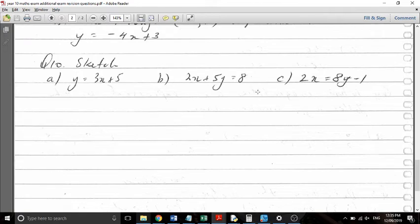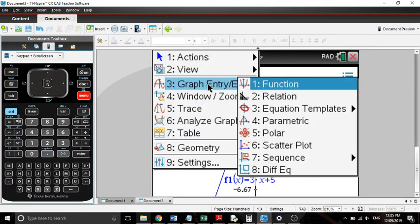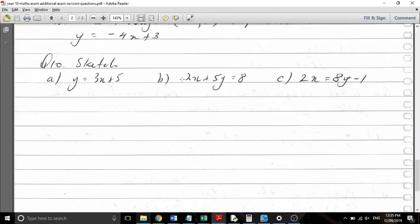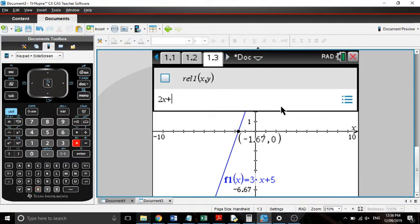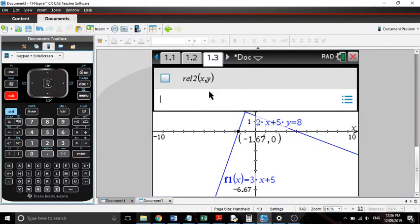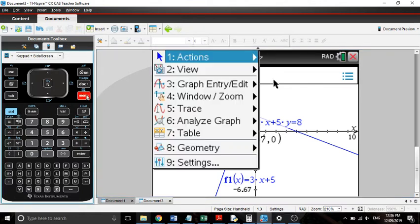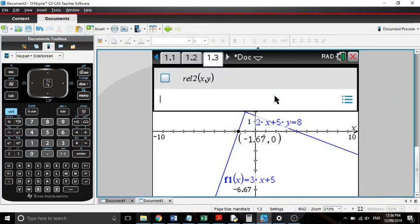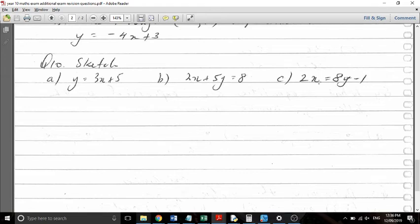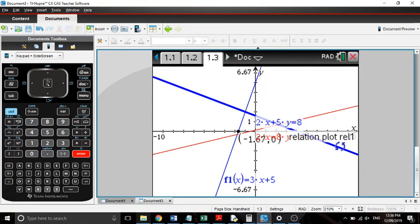If you're given something like this, where we've got 2x plus 5y equals 8, we can rearrange that so it's in the form of y equals. We can also... If we press menu, graph, entry, edit, and we click on relation, we can just type it in as it is. So we can say 2x plus 5y equals 8. And it'll draw that for us. So that one again is tab, tab to open this thing, menu, graph, entry, edit, it's set the function by default, but you go menu, graph, entry, edit, and we can set it to relation, and then you can just type in the thing as it is. 2x, so we can try this one now as well. 2x equals 8y minus 1, and it draws that one as well.